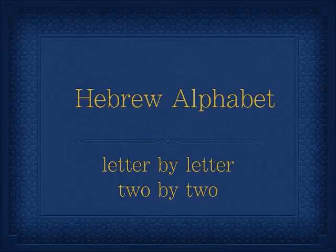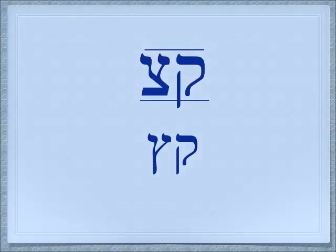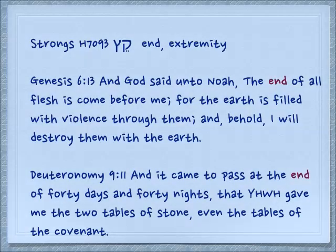Shalom. Today we're going to look at another pair of letters that make a word and have meaning in the words associated with them. These two letters are kuf and sadi. In the middle of a word, sadi looks like the top line, but at the end of the word sadi looks like the bottom line. Together they spell a word which is ketz, and everything we look at today is going to have to do with the end of something or cutting something off.